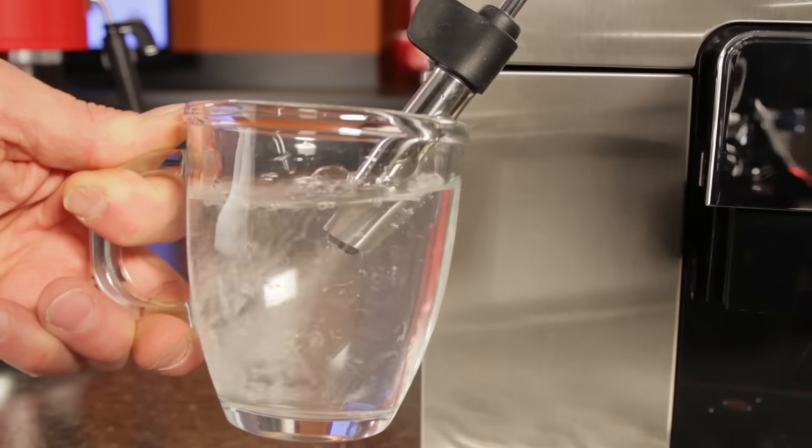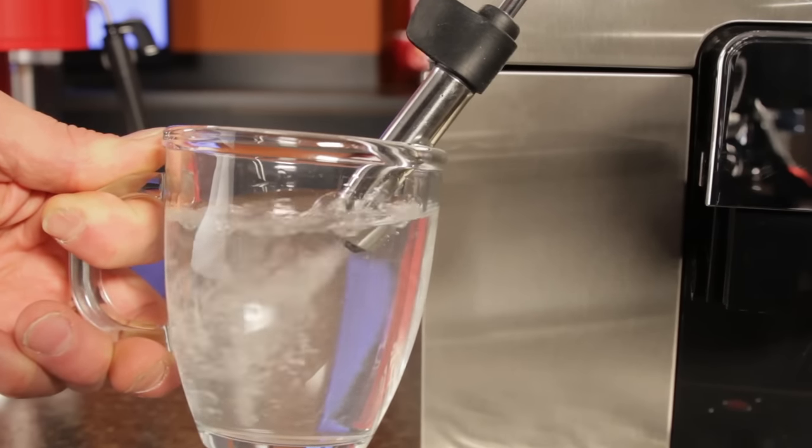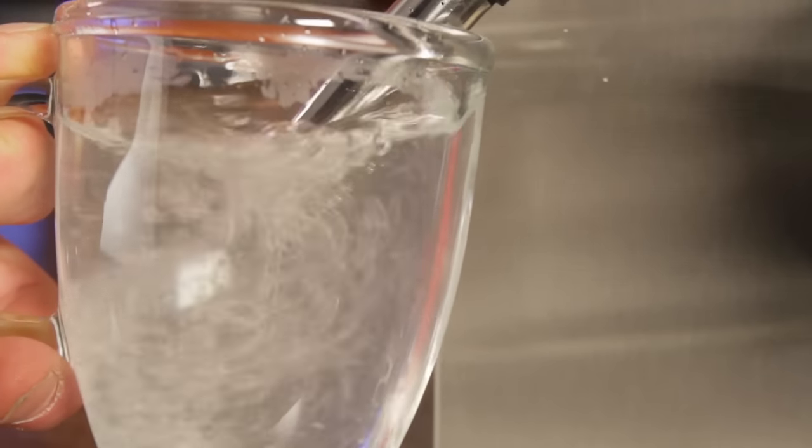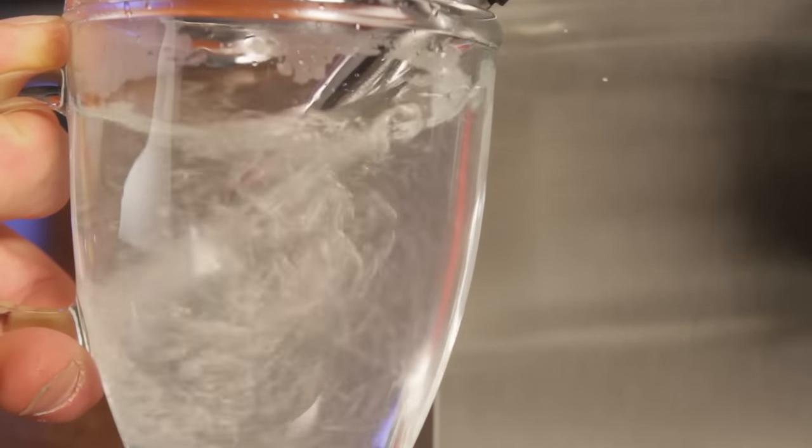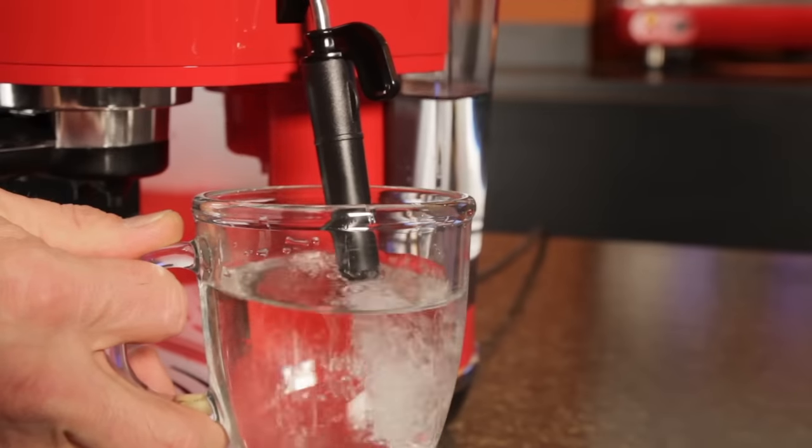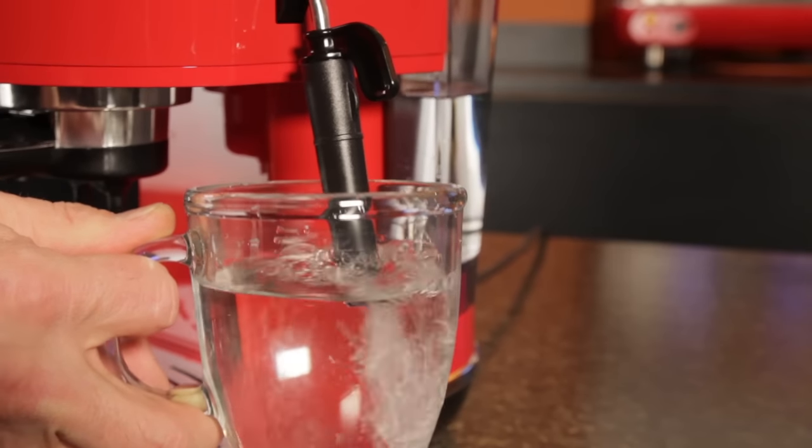If your wand's working well, you'll see a good amount of air bubbles swirling around your glass. Now in a minute I'll get into detail on how tip position affects frothing, but for now keep the tip of the wand very close to, but below the water's surface.